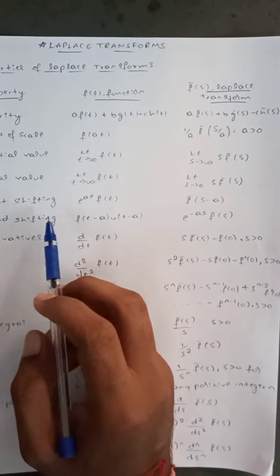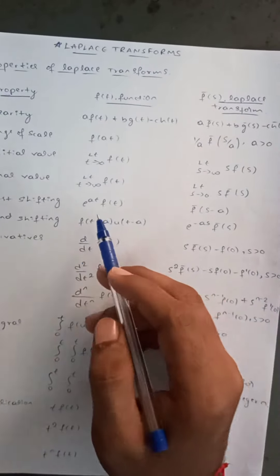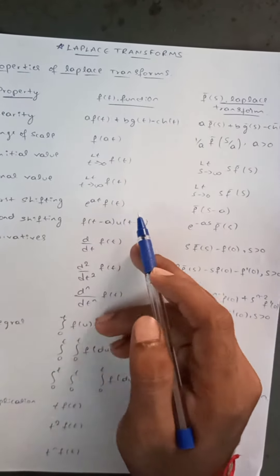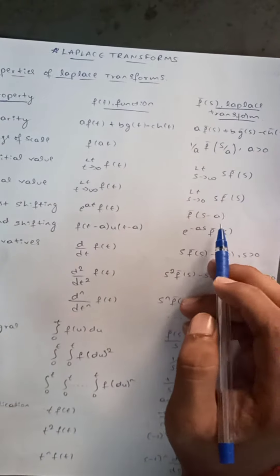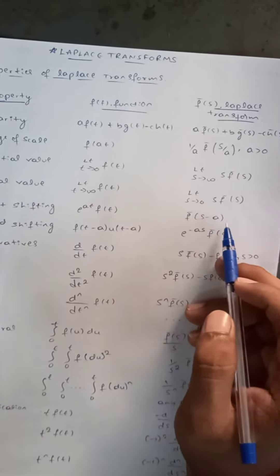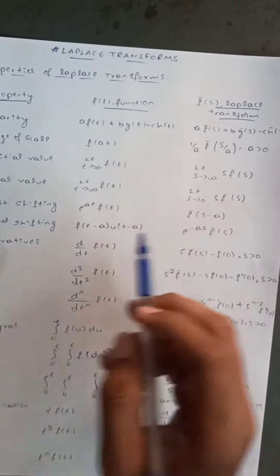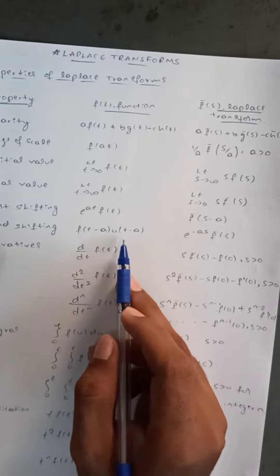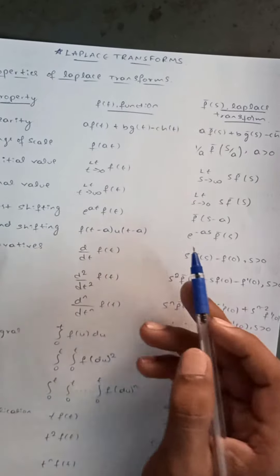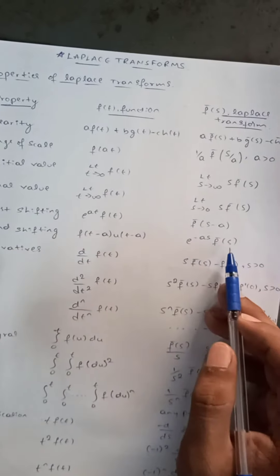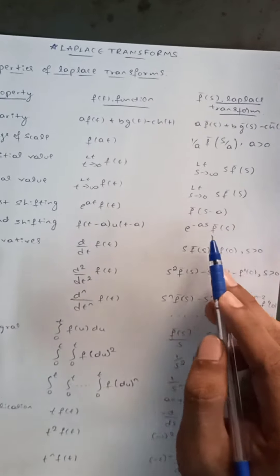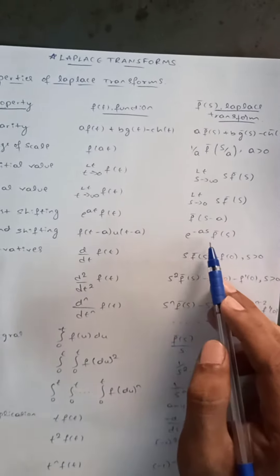For first shifting: the Laplace transform of e^(at)·f(t) gives f̄(s − a). For second shifting: the Laplace transform of f(t − a)·u(t − a) gives e^(−as)·f̄(s).